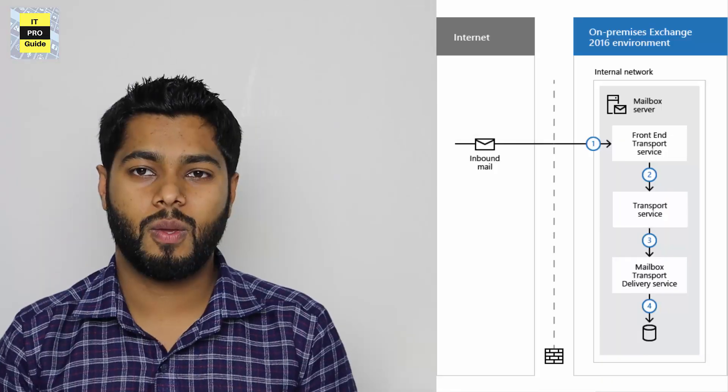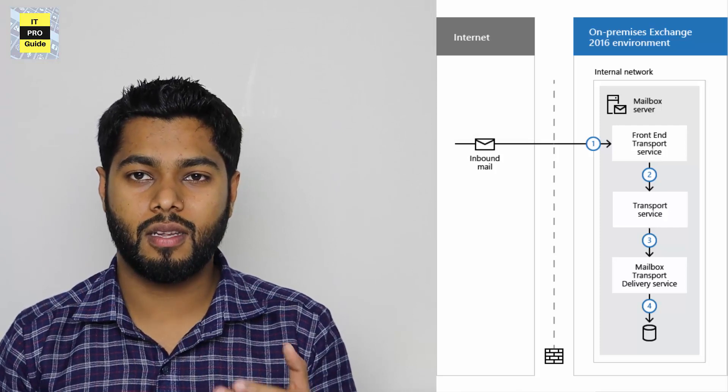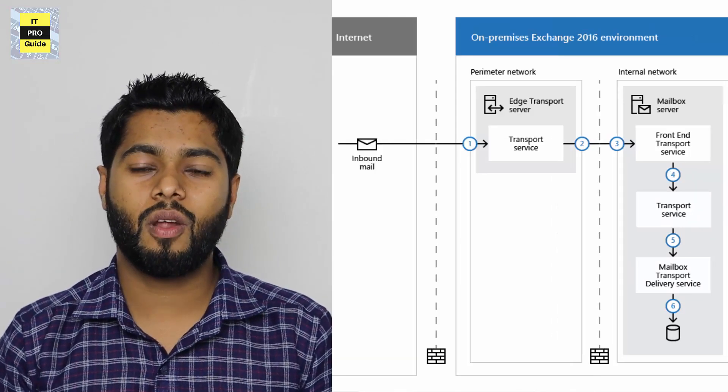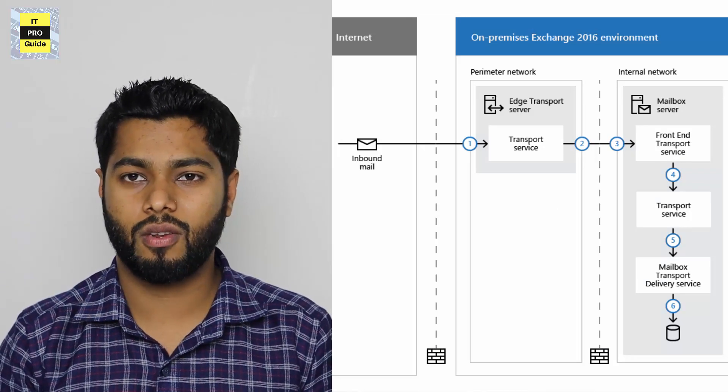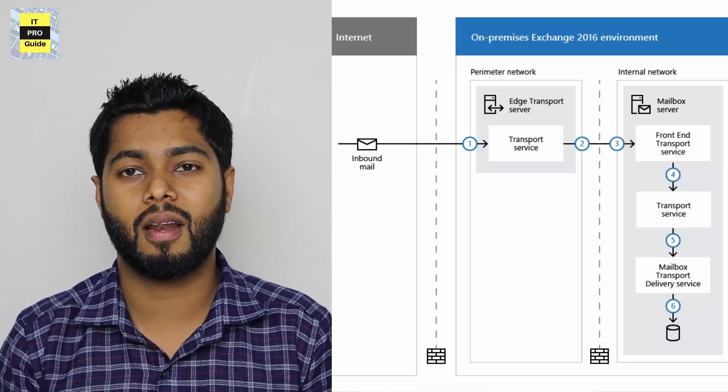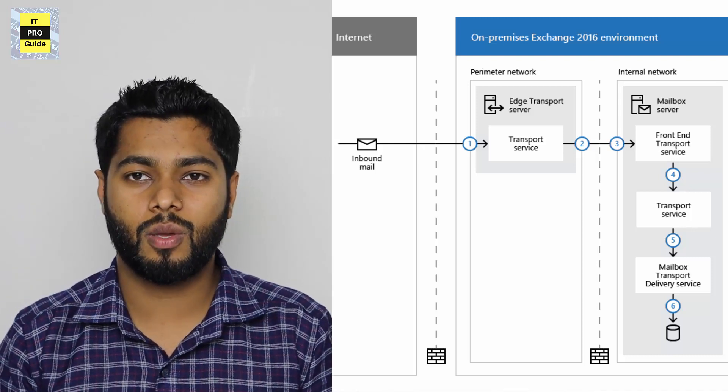Now let's see how to configure a receive connector. To configure one, you need to decide how you want to receive emails. You can directly receive email from the internet through Exchange Server — that is the first option. The second option is to use edge transport service, which is a Microsoft product, or you can use Cisco IronPort or Symantec Secure Email Gateway — third-party secure email gateway products. Based upon that, the configurations will change.